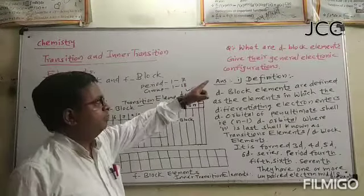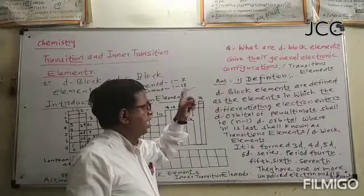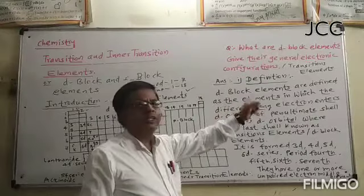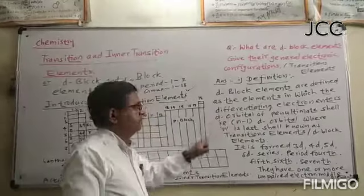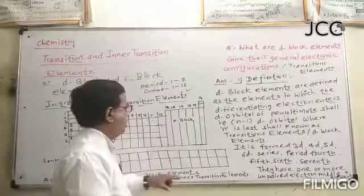D-block elements are defined as the elements in which differentiating electrons enter in d-orbitals. D-orbitals: S, P, D, F orbitals. For differentiating electrons enters in d-orbitals.